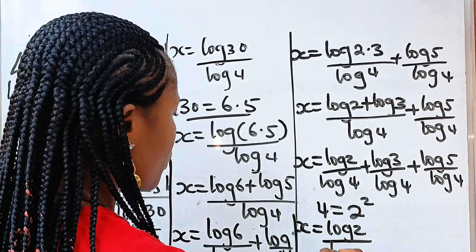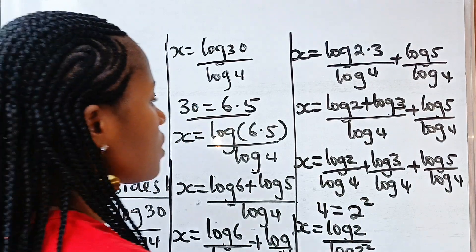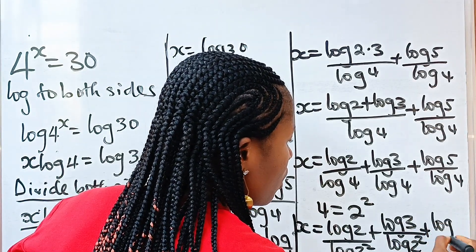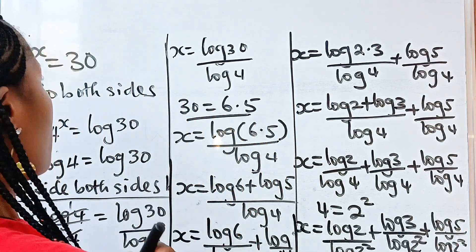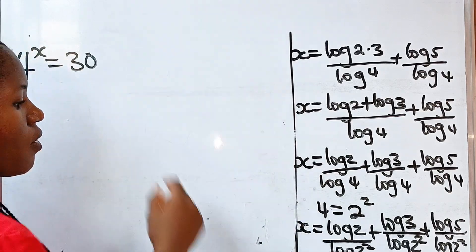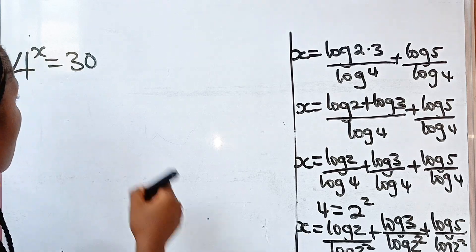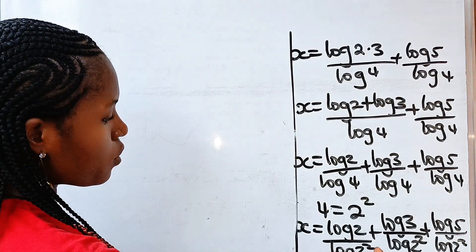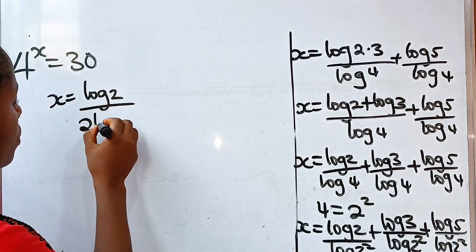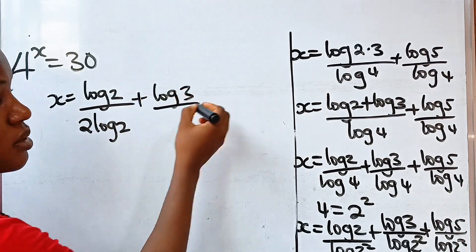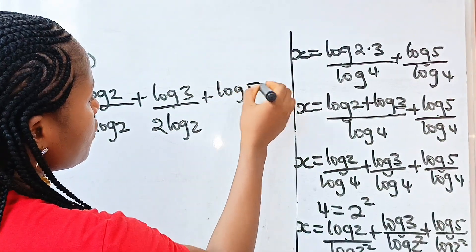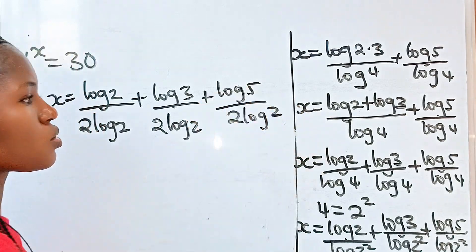So x equals log2 divided by log(2²), plus log3 divided by log(2²), plus log5 divided by log(2²). Applying the power rule, log(2²) becomes 2·log2, so we have log2/(2·log2) plus log3/(2·log2) plus log5/(2·log2).